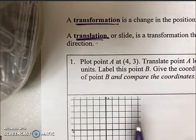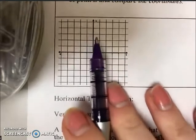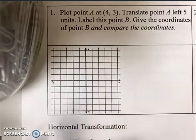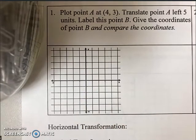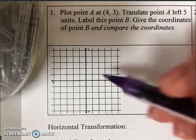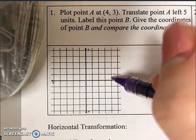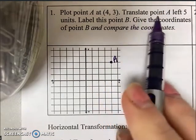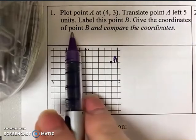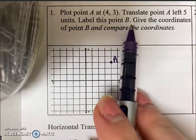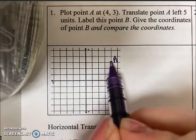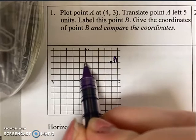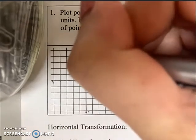Let's look at this first example, number one. Plot point A at (4, 3). So that's one, two, three, four, and one, two, three—that's point A. Now we want to translate point A left five units and label this point B. If I translate this point left five units, that's one, two, three, four, five. Here's my new point we're calling B.